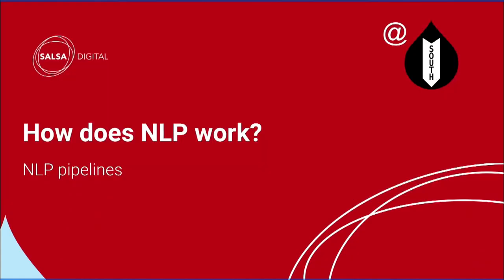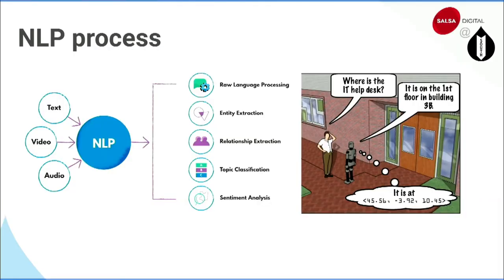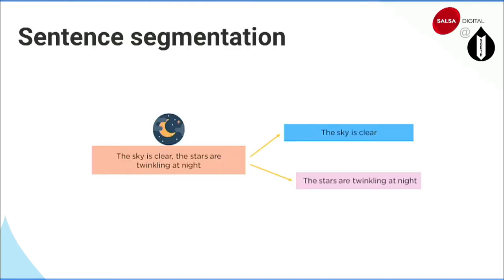How does NLP actually work behind the scenes? It's a simple process: take input, provide output. NLP can handle text, video, and audio. If someone asks whether we can extract information from a video, yes — you can process the video transcript with NLP to get a summary, tags, or whatever entities you want. There are subtasks performed in phases of NLP.